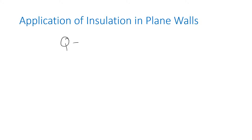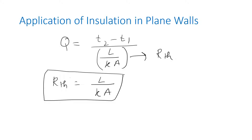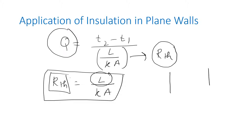Now let's see what insulation does in a plane wall. We all know the heat transfer equation of a plane wall: q = (T2 - T1) / (L/k). This is the thermal resistance R_th. You can directly observe the relation between R_th and length: as we increase the thickness of the wall, thermal resistance is also increasing. If thermal resistance increases, then heat transfer decreases.